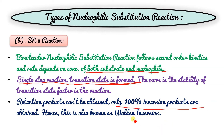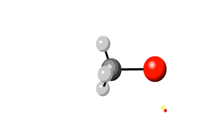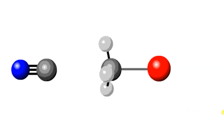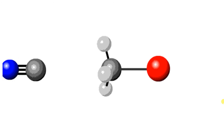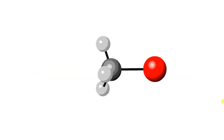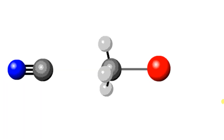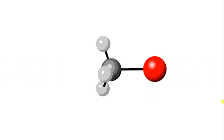This is also known as Walden inversion — named after the scientist Walden. The nucleophile that is already attached starts to come in from the back side while the leaving group simultaneously departs, leading to complete inversion of configuration.